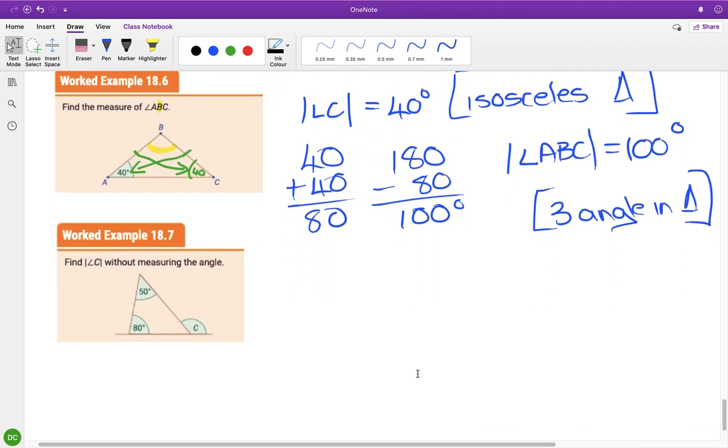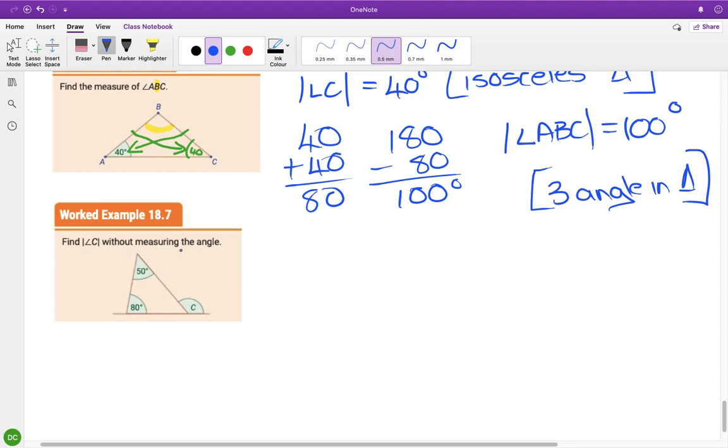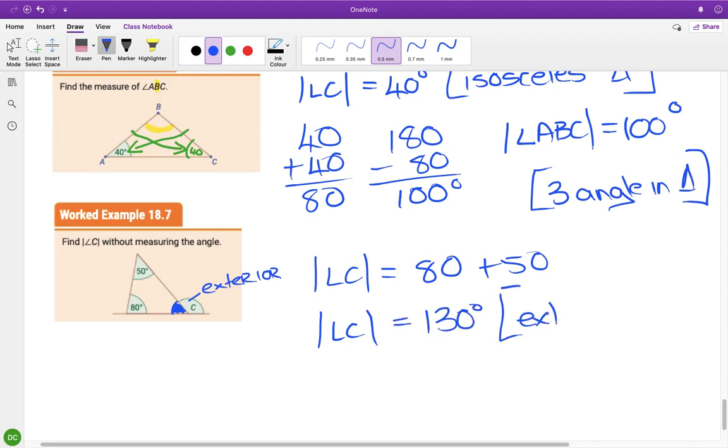And then the last one, without measuring C, find C without measuring the angle. Now, the triangle at the bottom has been extended, which means C is an exterior angle. So we're going to be looking at that theorem, where the exterior angle is equal to the addition or the sum of the interior opposites. So it's not marked, but if it were, we would ignore this angle because it's not opposite, it's adjacent. So it's going to be the other two added together, which is 80 plus 50. So angle C is 130 degrees. And I knew that because I used the exterior angle.